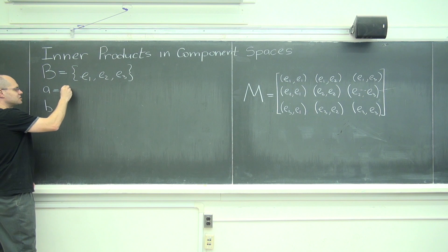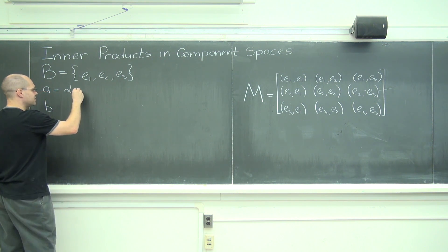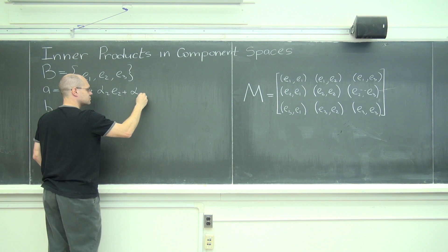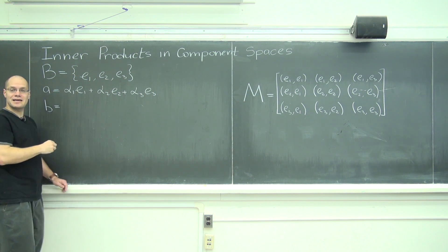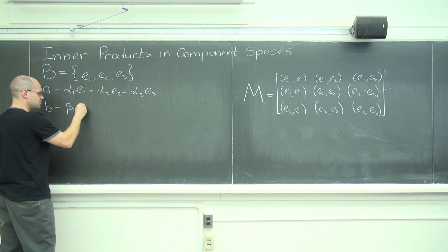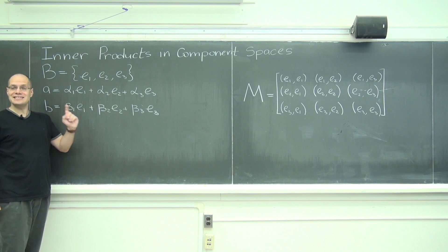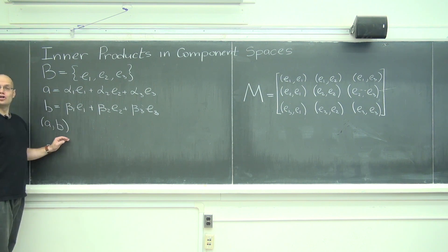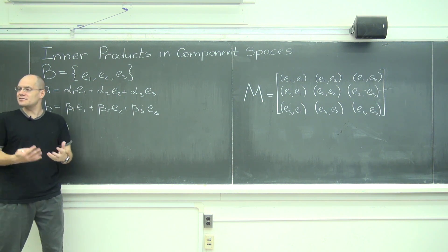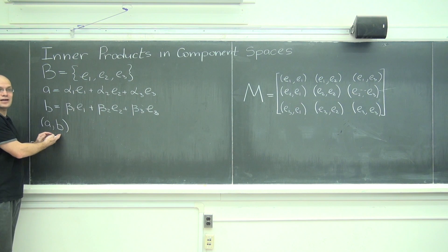And A has coefficients alpha 1, alpha 2, and alpha 3 with respect to this basis. And the vector B has coefficients beta 1, beta 2, and beta 3. And the question is, what does A dot B look like in terms of the three alphas and the three betas? What sort of arithmetic combination do you have to evaluate to get the answer for A dot B?